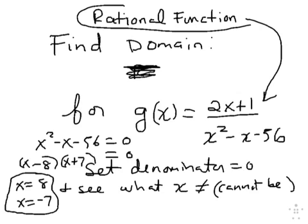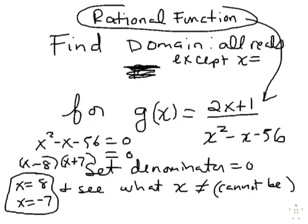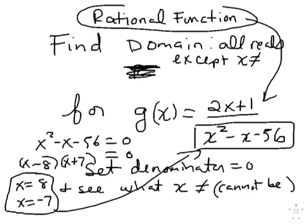So the domain of a rational function is, in words, basically all reals except x is not allowed to equal something. Well, whatever would cause the denominator to be zero. Well, we just found that if you put eight, store eight in the denominator, you're going to get out zero. If you store negative seven in the denominator, you're going to get out zero. So in words, all reals except x is not allowed to be eight and x is not allowed to be negative seven. And that's it.